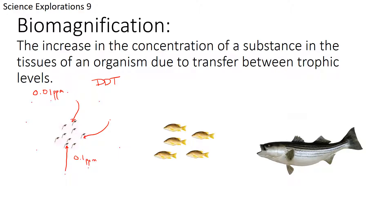So we now have 0.1 parts per million of DDT within each of these organisms — these are actually krill, but they could be mosquito larvae. What happens when you start to move a whole bunch of these individual organisms into one of these fish? Suddenly you have something called biomagnification. Biomagnification is the increase in the concentration of a substance in the tissues of an organism due to transfer between trophic levels. Because this individual fish is eating many, many of these mosquito larvae or krill, it begins to accumulate a larger quantity of the DDT in its body.